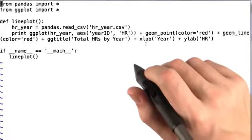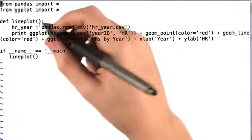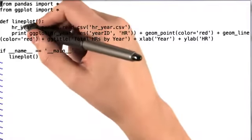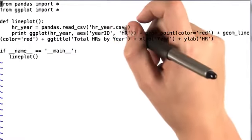All right, let's take a look at the code here. First, we create a pandas DataFrame called hryear that reads in the hryear.csv file.